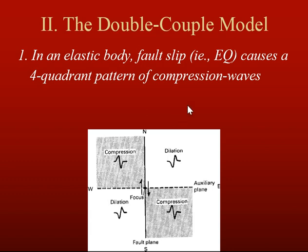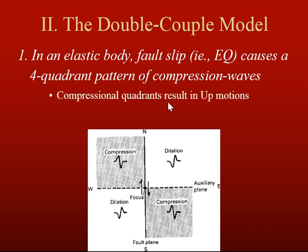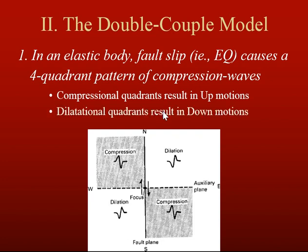In an elastic body, the fault slip from an earthquake causes a four-quadrant pattern of compression waves that we can actually observe. The compressional quadrants result in upward motions on our seismometers, and the dilational quadrants result in downward motions on our seismometers. So we can use this information to figure out what kind of motion took place on a fault. In this case, a strike-slip fault moving north on one side and south on the other leads to northwest and southeast quadrants being compressional, and northeast and southwest being dilational.